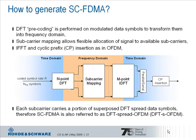The DFT precoding is the essential difference between downlink and uplink. What does DFT do? It is a mathematical operation, but compared to OFDM in the downlink where each subcarrier carries just one specific modulation symbol, the DFT takes the symbols and spreads them over the available subcarriers. In that manner, each subcarrier carries a portion of superposed symbols. Therefore, single-carrier FDMA is also referred to as DFT spread OFDM.